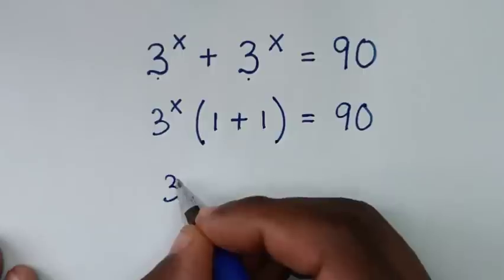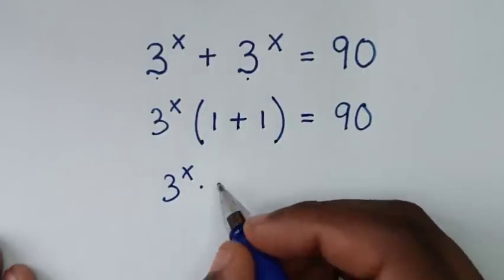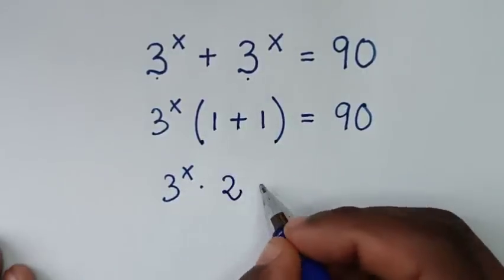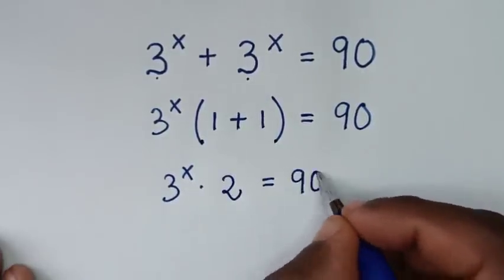It will be 3 power of x times 1 plus 1, which is 2, is equal to 90.